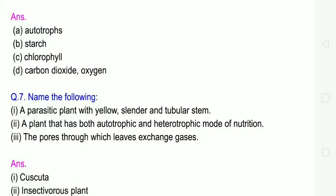Question 7: Name the following. First one, a parasitic plant with yellow, slender and tubular stem. Parasitic plant with yellow color, slender like thin, and tubular stem. What plant is there? Cuscuta plant. Answer: Cuscuta.